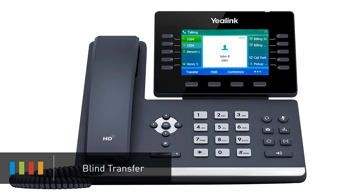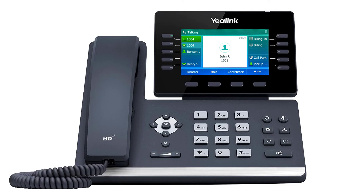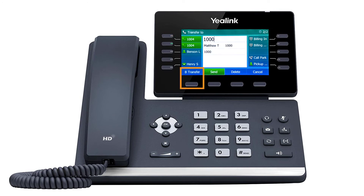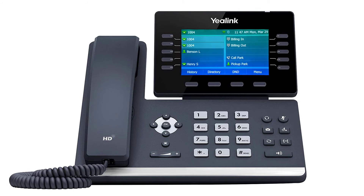A blind transfer allows you to immediately transfer a call to another number or extension. Press the transfer soft key on the bottom of the screen, dial the number or extension you wish to transfer the call to, and press B transfer. The call will immediately start ringing to the second party.